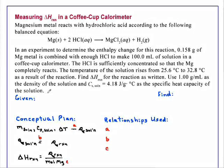The HCl is sufficiently concentrated so that the Mg completely reacts. The temperature of the solution rises from 25.6 degrees C to 32.8 degrees C as a result of the reaction.